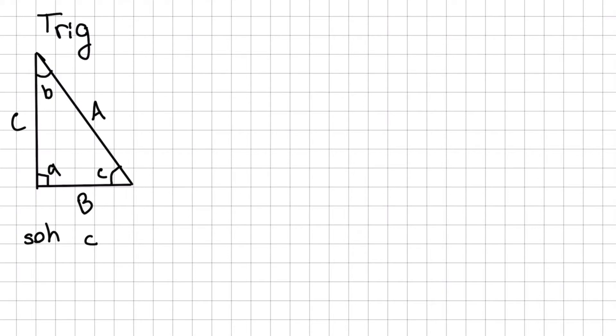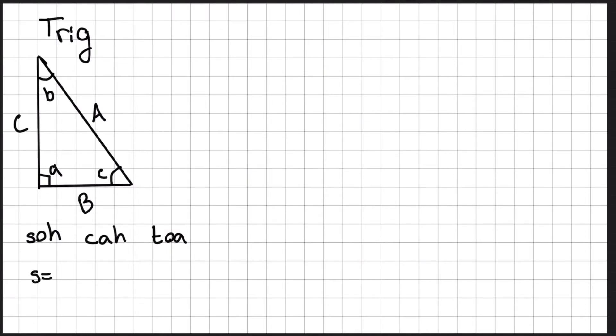You've probably heard of something called SOHCAHTOA. This is just an abbreviation for some of the helpful trigonometry ratios. S equals O over H means that sine equals opposite over hypotenuse.